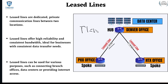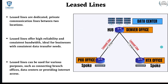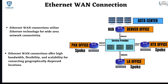Leased lines in America come in T-speeds: T1 is 1.544 megabits per second, and the next is T3. In Europe, we have E-speeds — E1 is approximately 2.048 megabits per second, and E3 is around 34 megabits per second. That's what a leased line is: it's not any shared segment or shared Ethernet segment within an ISP.